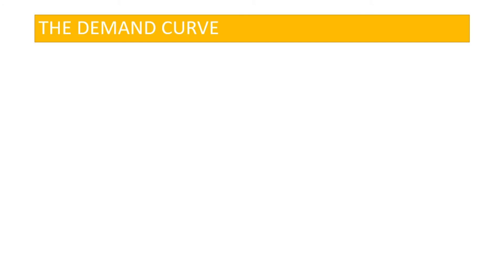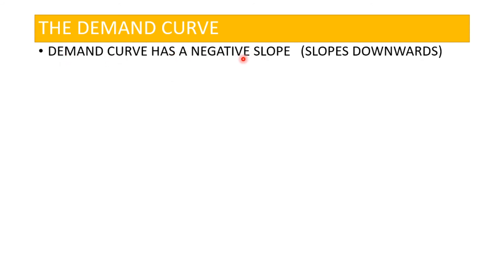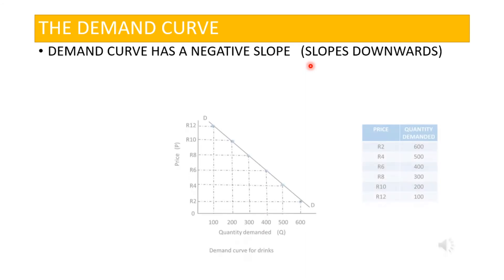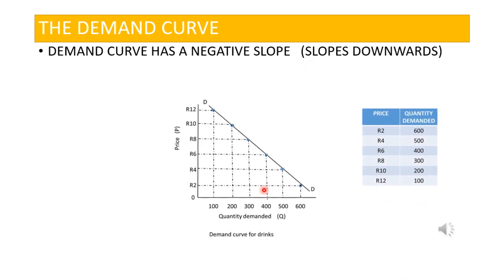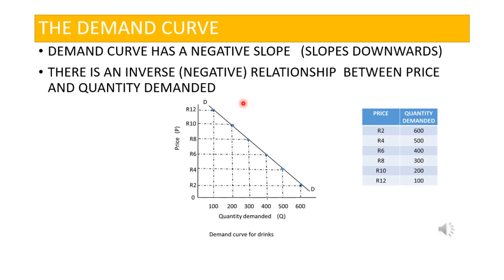Now let us talk more about the demand curve. The demand curve has a negative slope — it slopes downwards. As you can see, the demand curve here slopes downwards, and this is what we mean by a negative slope.